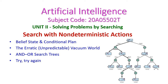In today's class we will see the search with non-deterministic actions, which comes under the second unit of artificial intelligence. In this lecture we will see the belief state and conditional plan. For this we will see one example, the erratic vacuum world, and for explaining this conditional world we will see the AND-OR search tree and try-and-try-again tree.